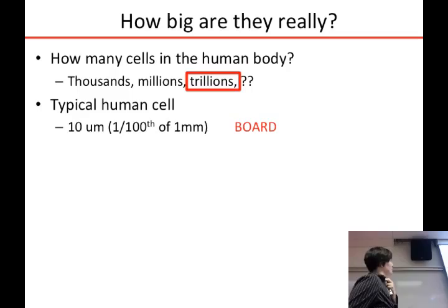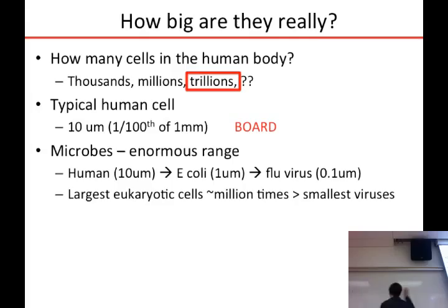A typical human cell is 10 to 30 microns. Just to give you a sense of scale of what that would really look like — if this is one millimeter, this is about 10 microns. So they're small.